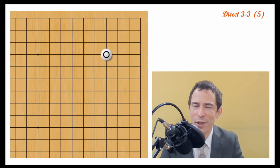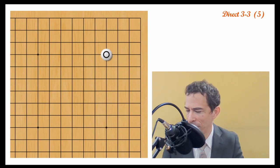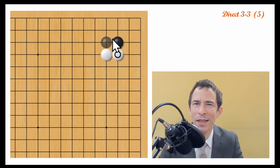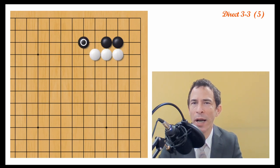Hello, I'm Michael Redmond, professional 9-dan Go player. In this video, I'm going to continue with my commentaries on the 3-3 point, and I'm going to talk about the move here, where black jumps on the third line.